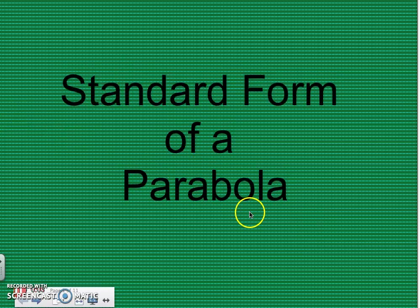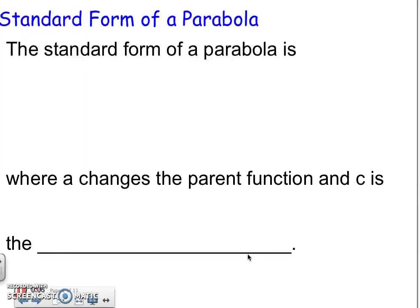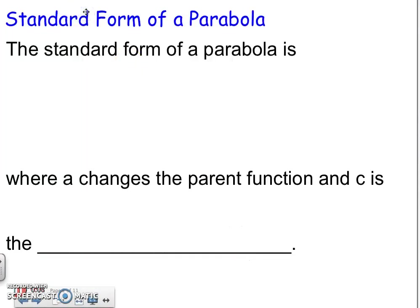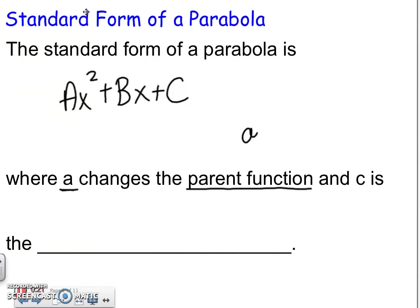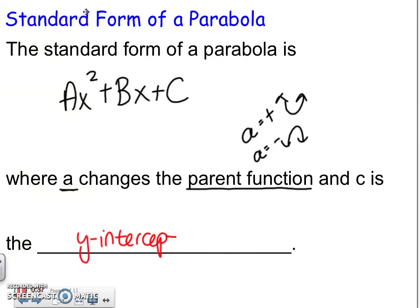In this video you're going to learn about the standard form of a parabola and how to graph it. The standard form of a parabola is ax squared plus bx plus c. 'a' is going to change the parent function — if a is positive, the graph opens up; if a is negative, the graph goes down. And c is going to be the y-intercept, so the number at the end is the y-intercept.